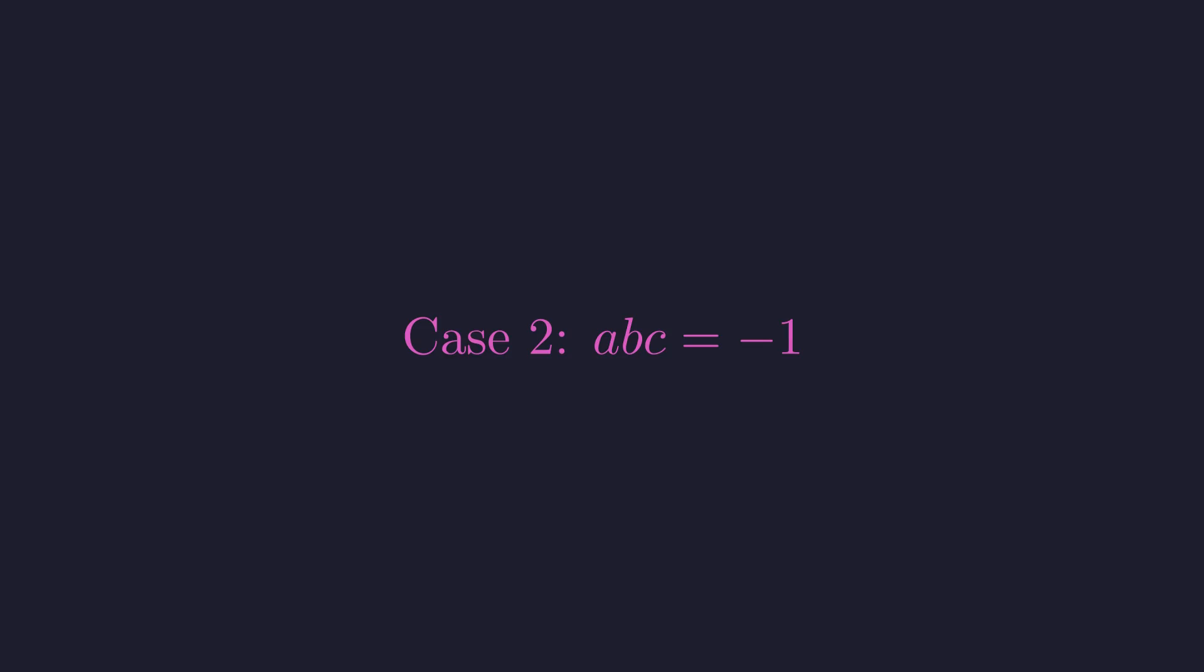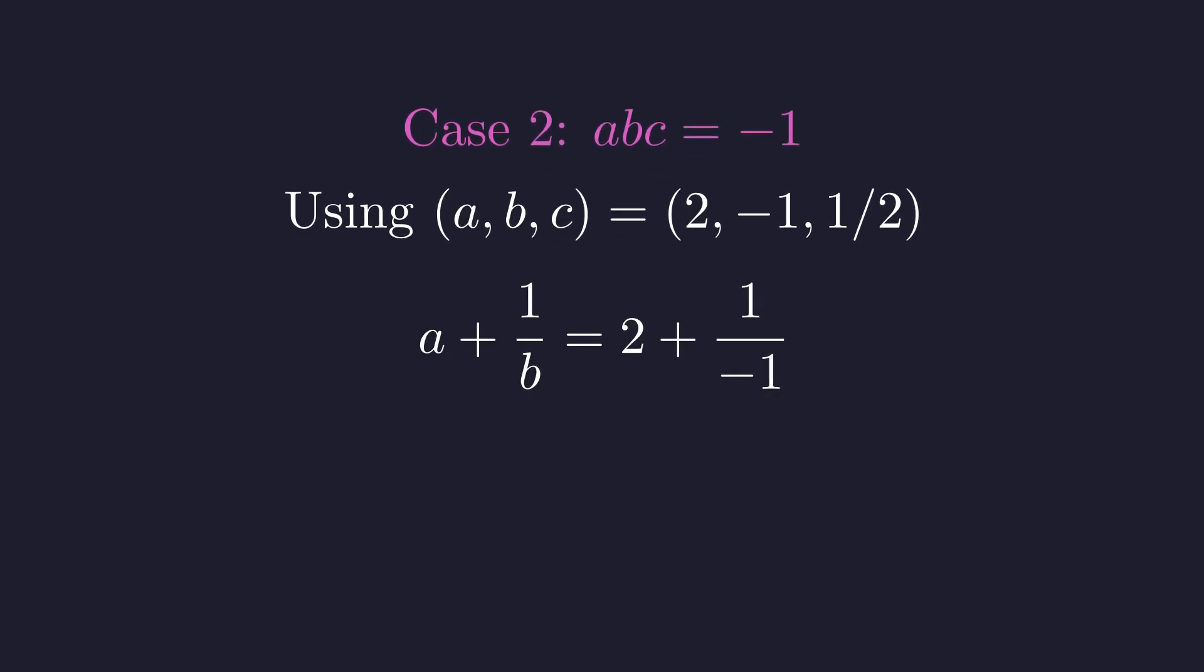Now for the case where ABC equals negative 1. We'll use the example A equals 2, B equals negative 1, and C equals 1 half. Now for our second example, substituting into a plus 1 over B gives 2 plus 1 over negative 1.